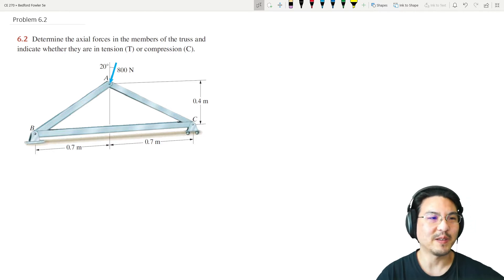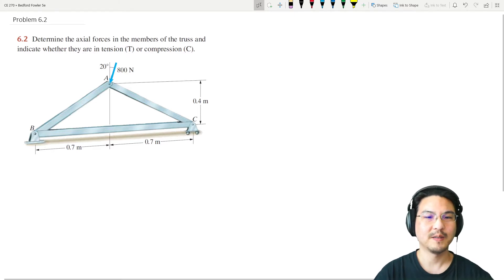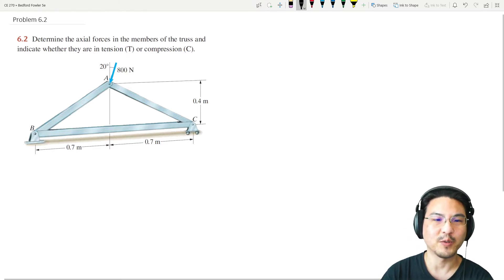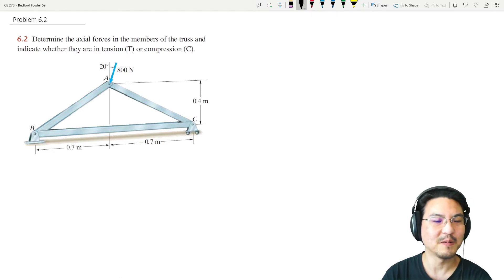Alright, let's use the method of joints to solve this problem. Method of joints means you go joint to joint, so let's just go in order A, B, C. Starting with joint A.